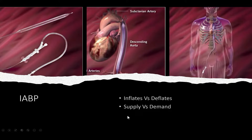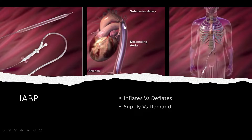When the heart relaxes, during the diastolic phase, is when the balloon pump inflates. It sends more blood into the heart through the coronary arteries, supplying the heart with more oxygenation. So the balloon pump improves the supply of oxygen and decreases the demand by reducing the afterload — the pressure the heart has to push against to pump blood.